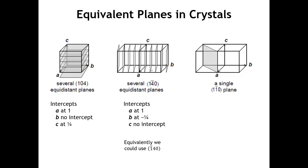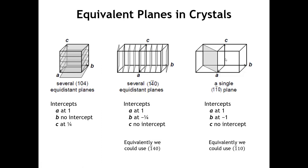The last example has an intercept with the A axis at 1, one with the B axis at minus one, and is parallel to the C axis. So this is the (1, 1̄, 0) plane. For the set of equivalent lattice planes, we could also call it the (1̄, 1, 0) set of planes.